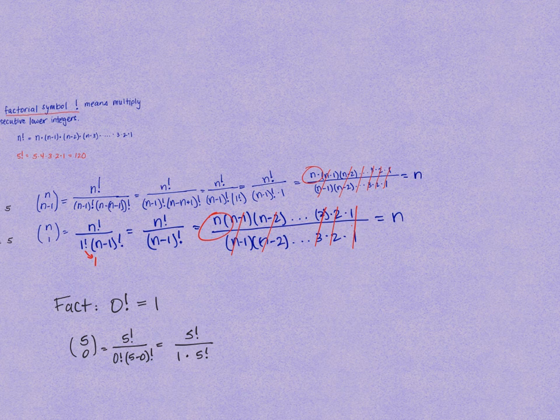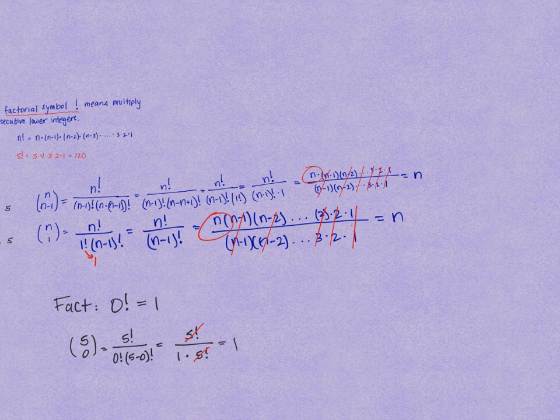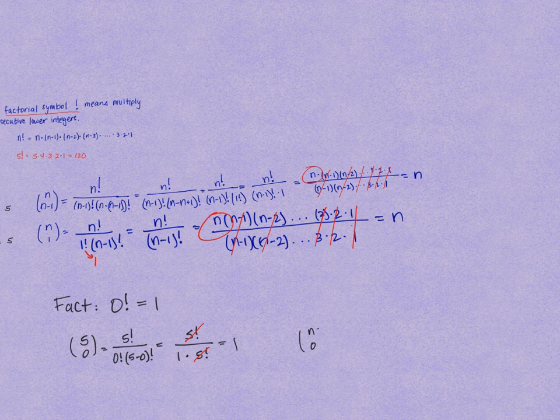So could we make the generalization that n choose 0 is 1? Check it out for yourself.